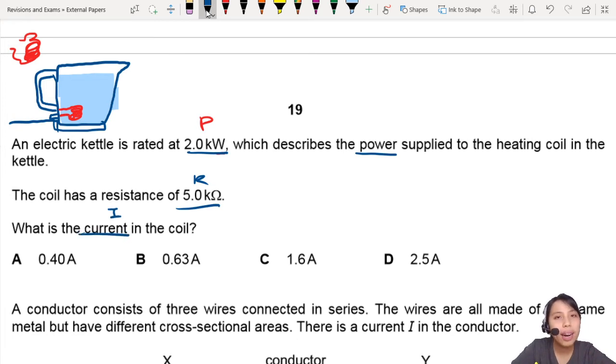You look at P, you look at I, you look at R. We know an equation for this. It's P equals to I squared R. So if you want to find current, then you just need to rearrange. So P over R, square root. Done.